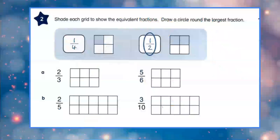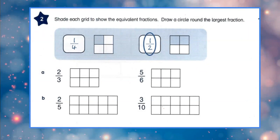This is question number 2 from page number 8t. What they are giving you as the command: first of all, you have to shade each grid to show the equivalent fractions. After that, you have to draw a circle around the largest fraction. So, shade each grid — but the key word they are using is equivalent fractions.